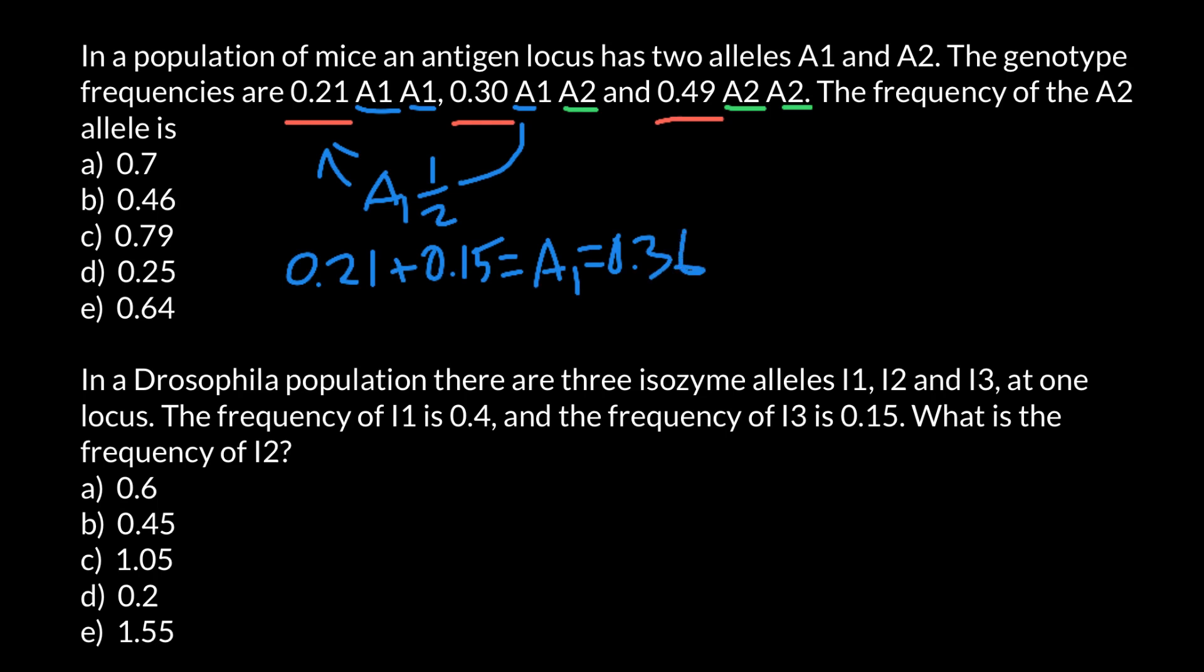And if we take once again one half of this frequency of the heterozygous genotype, one half would be allele A2 and add it here. We are going to get 0.49 plus one half of 0.30, which would be 0.15, and we are going to get 0.64. This is going to be the frequency of the A2 allele. So the frequency of the A2 allele is 0.64, answer E.